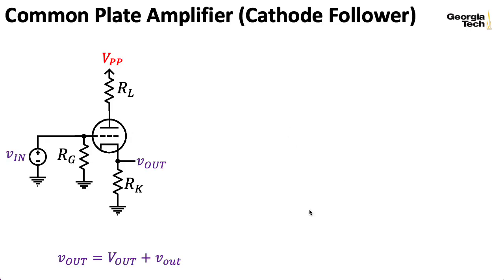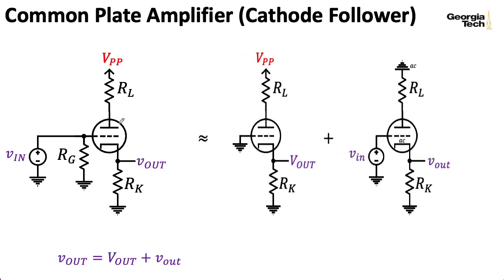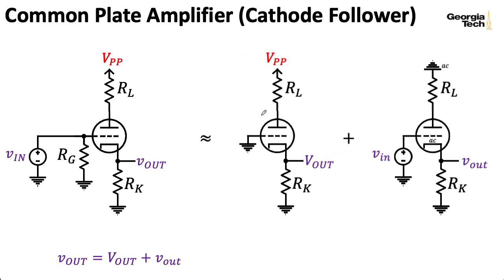One way to build a common plate amplifier would be to just build a common cathode amplifier and take the output from the cathode instead of the plate. If we were to build such a thing, we could expand it out as thus. This looks like the DC circuit and the small signal AC circuit for a common cathode amplifier, except we're taking the output from the cathode instead of from the plate.